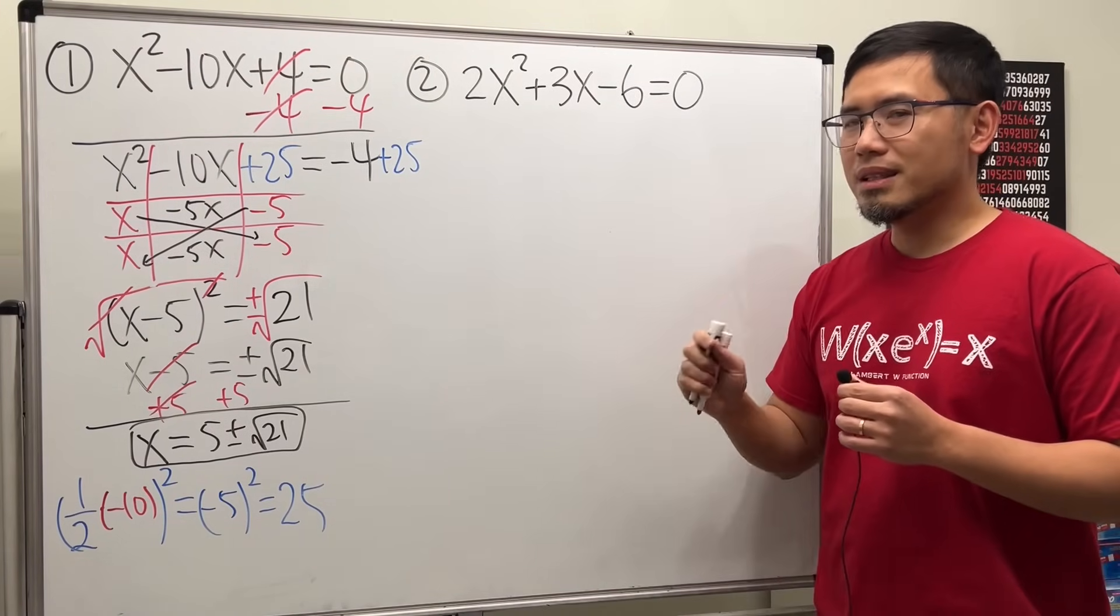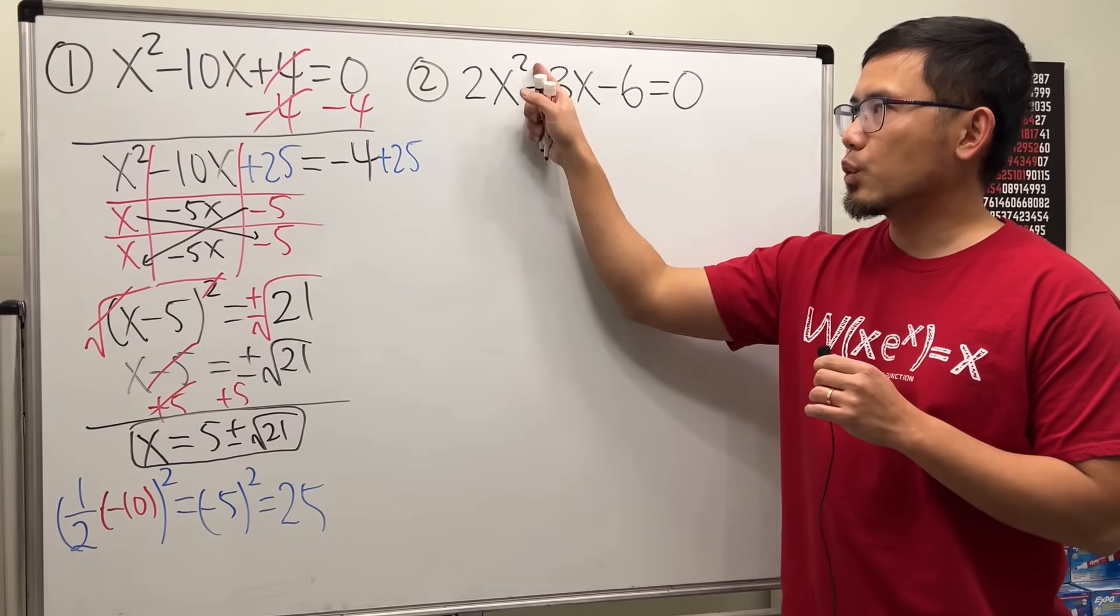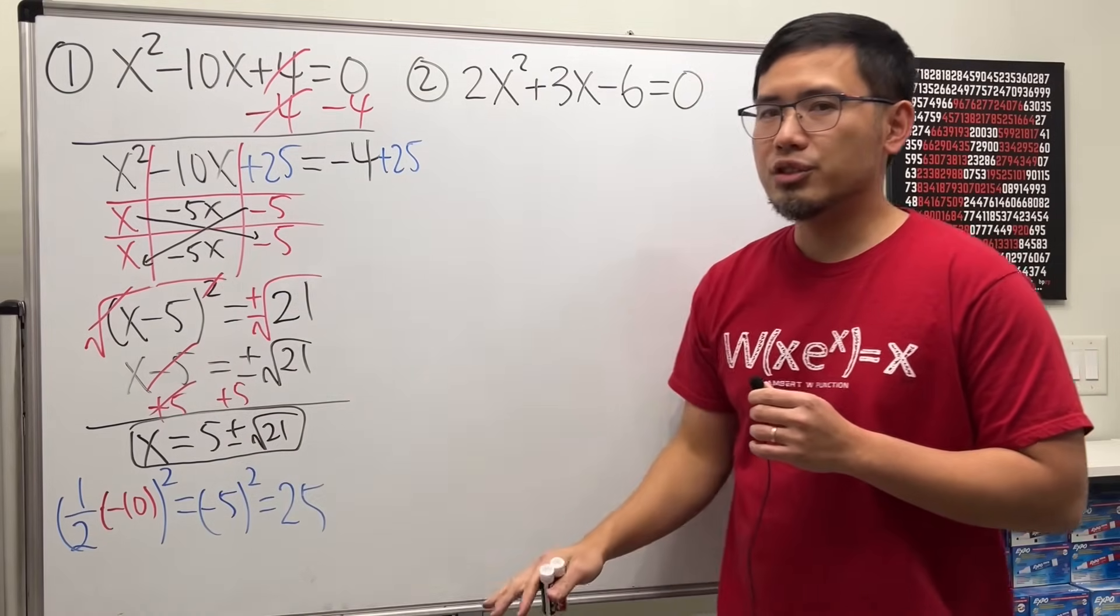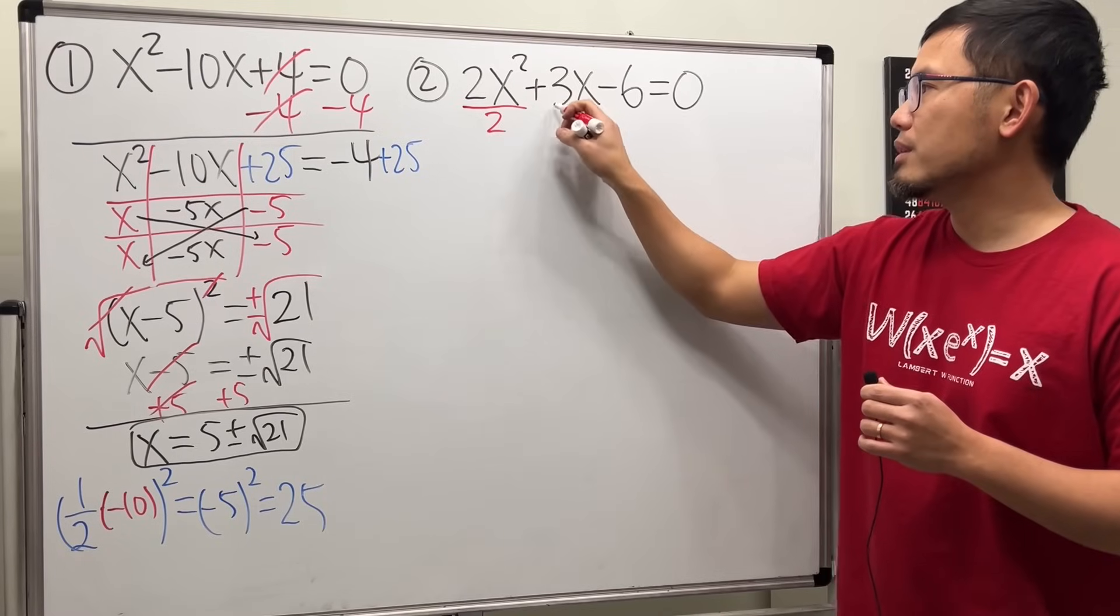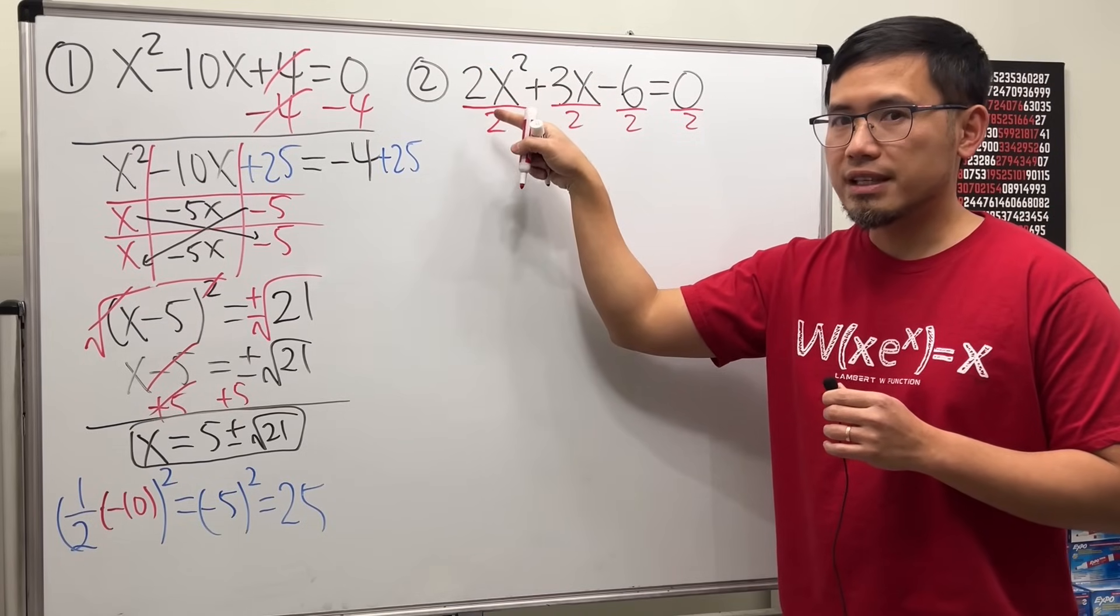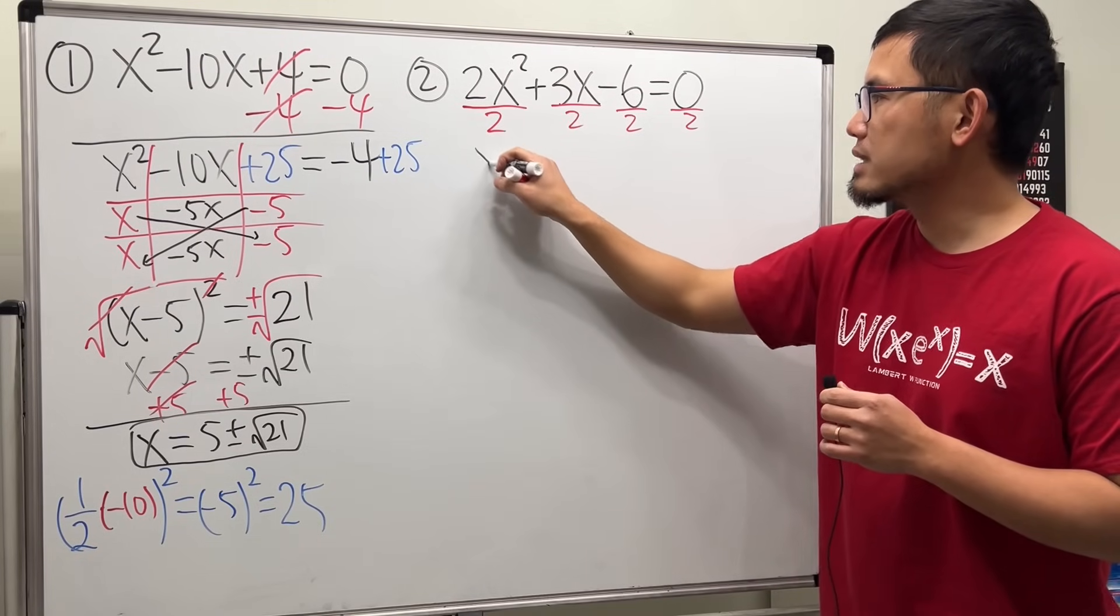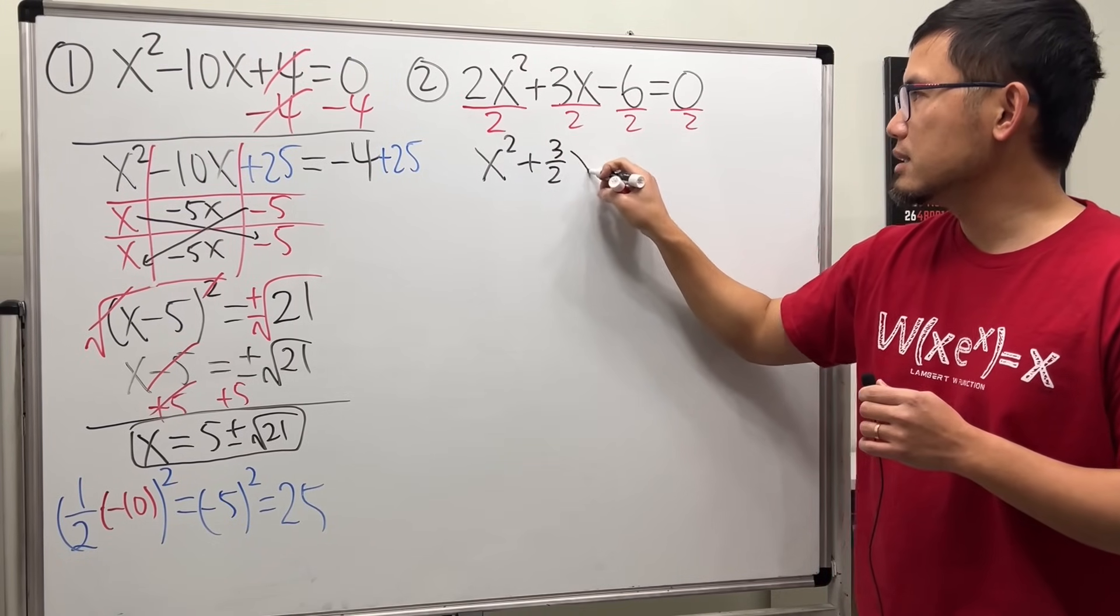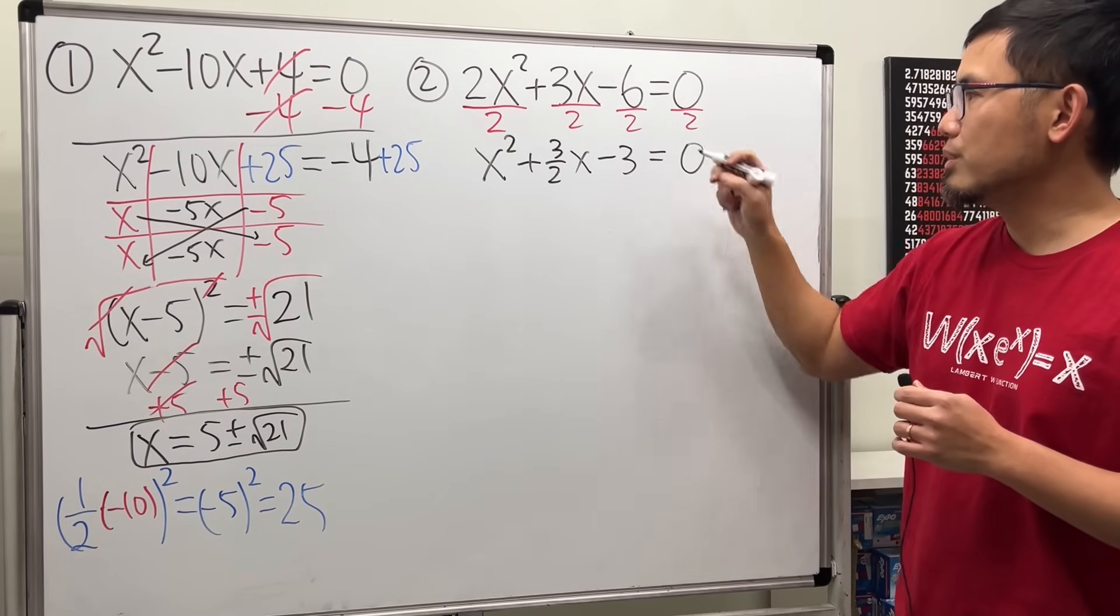All right, now for the second one, it's a little bit trickier because we have a 2 in front of the x squared. So we cannot do this yet. We cannot find a magic number yet. We will have to first divide everybody by 2. We must have a 1 in front of the x squared in order for the steps to work. So after we do that, we will get x squared. And this right here, let's just put it as plus 3 over 2x. And this is negative 3. And then that's equal to 0 divided by 2, which is 0.